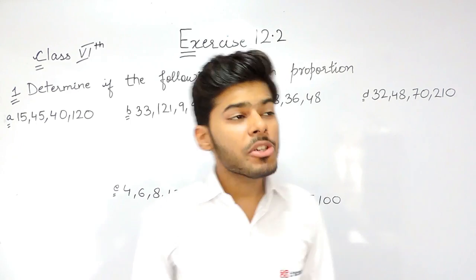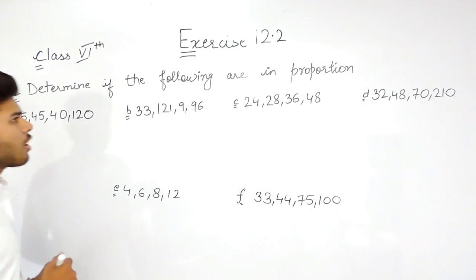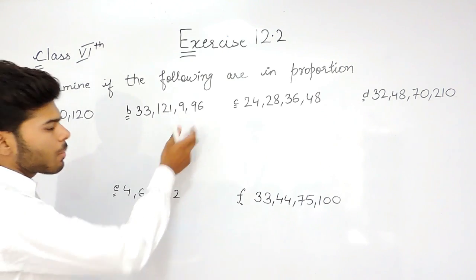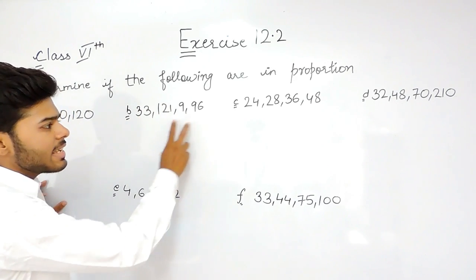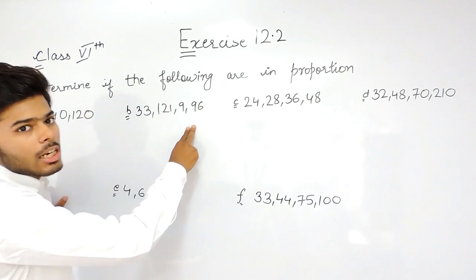Hello everyone, this is the first question of exercise 12.2 of chapter ratio and proportion. We have to check whether the following are in proportion or not. Four numbers are in proportion if the ratio of first two numbers equals the ratio of the other two numbers.